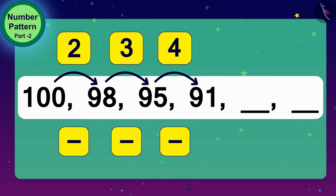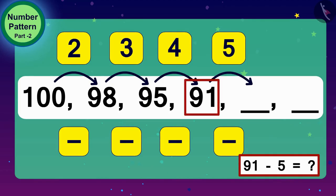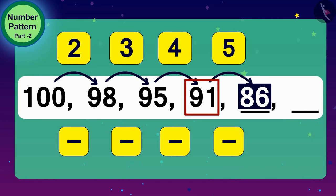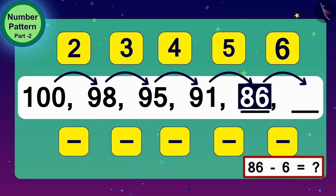Children, here you can see that the number being subtracted every time is increasing by 1 to get the next number. So, the next number in this pattern will be 5 lower than 91 or 86. And what shall we do to get the next number? That's correct. Minus 6. That is 80.